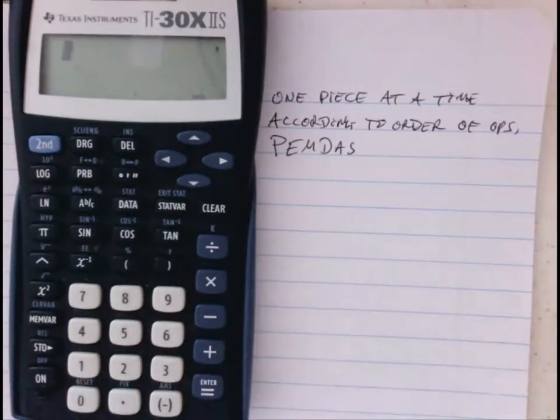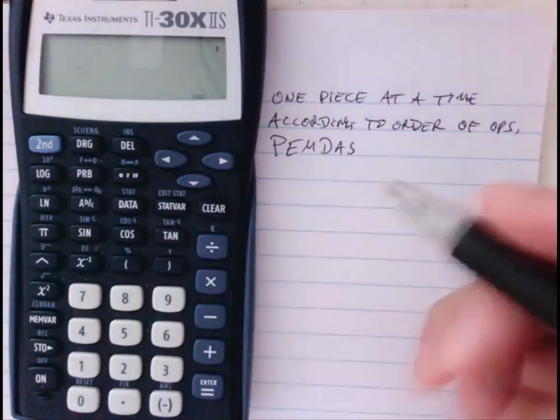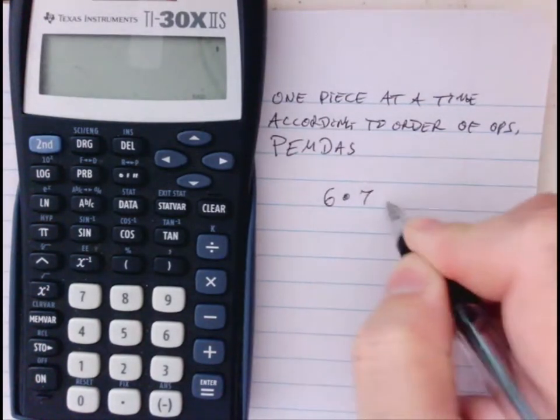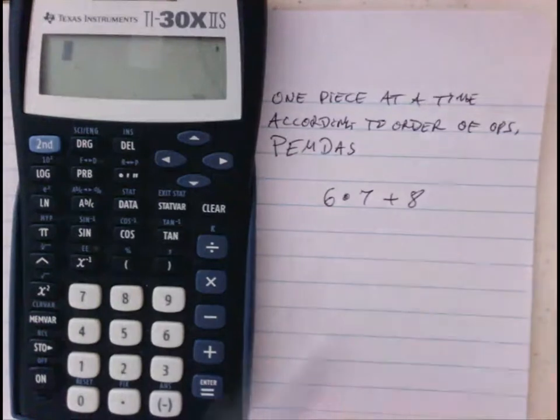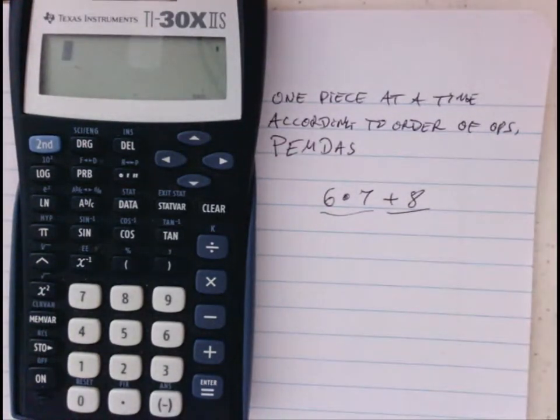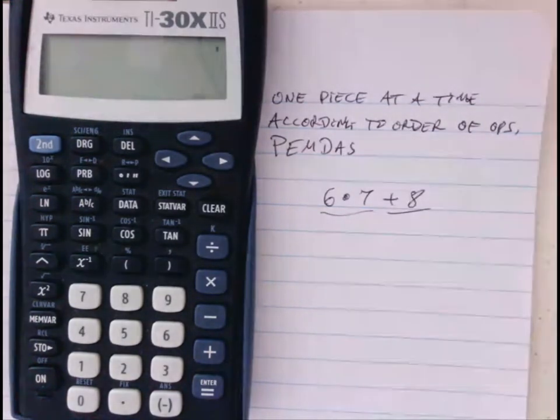I also want to introduce the previous answer feature on almost all scientific calculators. This feature allows me to get an answer and compute on from there. For a quick example, let's say that I want 6×7+8. PEMDAS says I should multiply before adding. I could do the whole thing in one calculation, but I'm going to do it one piece at a time according to order of operations.